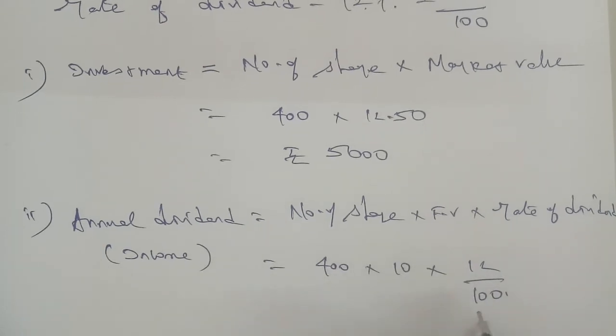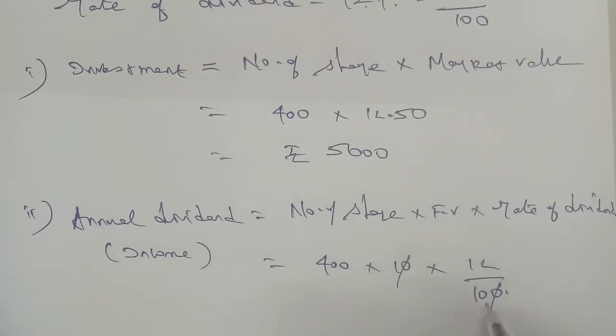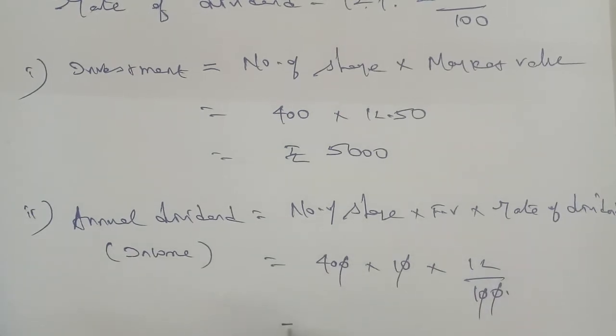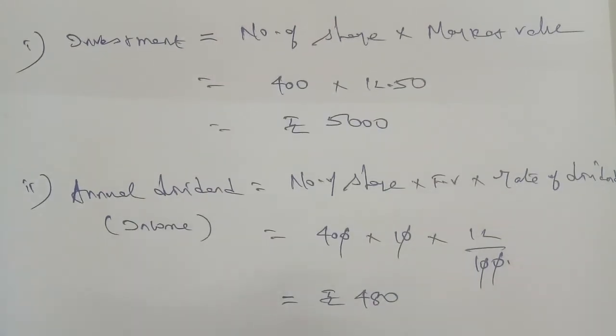Now we cancel. Here is 0, here is 0, so remaining 40 into 12. This equals 480. Therefore, rupees 480 is the answer for subdivision 2.